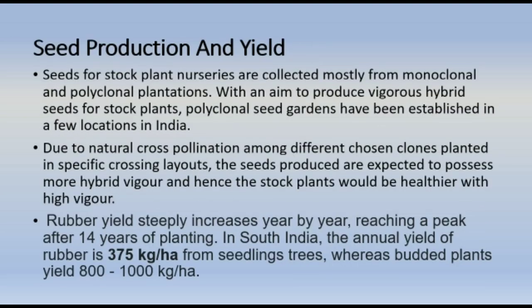Seed production: Seeds for stock plant nurseries are collected mostly from monoclonal and polyclonal plantations with the aim of producing vigorous hybrid seeds for stock plants. Polyclonal seed gardens have been established in a few locations in India. Due to natural cross-pollination among different chosen clones planted in specific crossing layouts, the seeds produced are expected to possess more hybrid vigour, and hence the stock plants would be healthier with high vigour.